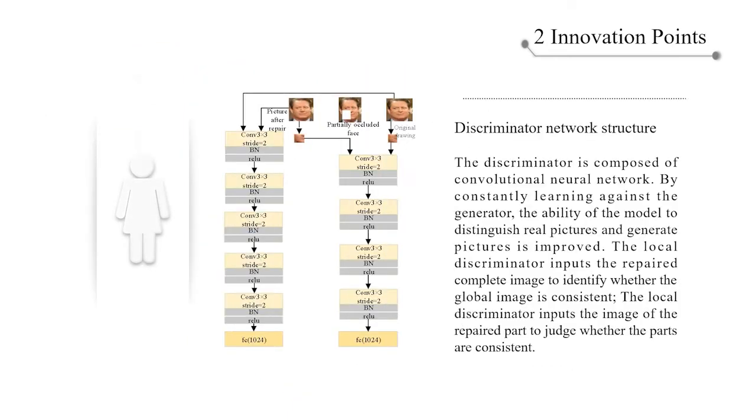Thirdly, the discriminator is composed of a convolutional neural network by constantly learning against the generator. The ability of the model to distinguish real pictures and generate pictures is improved. The global discriminator inputs the repaired complete image to identify whether the global image is consistent. The local discriminator inputs the image of the repaired parts to judge whether the parts are consistent.